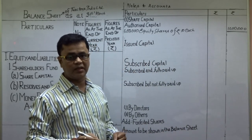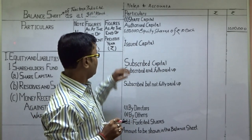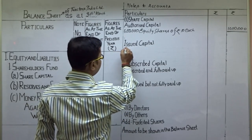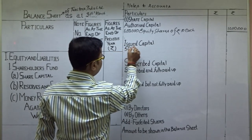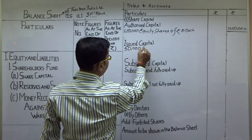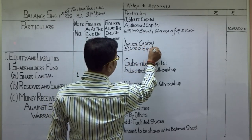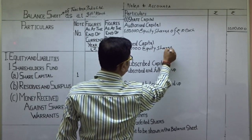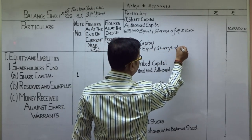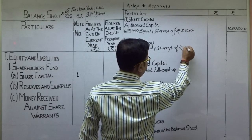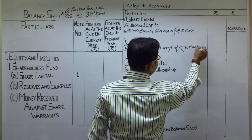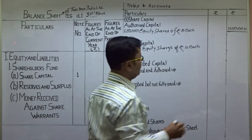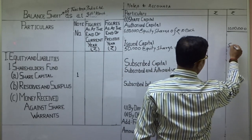Question के साथ — 50,000 shares issued capital कितनी हो गई — 50,000 equity shares, rupees 10 each। यानि कंपनी 50,000 shares issue कर रही है — यानि total issued capital कितने का हुआ।